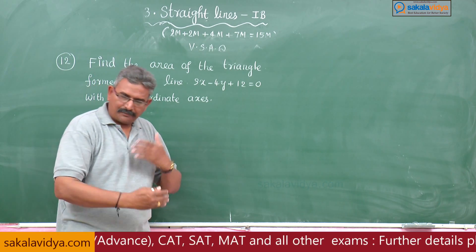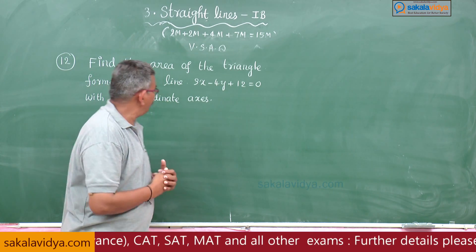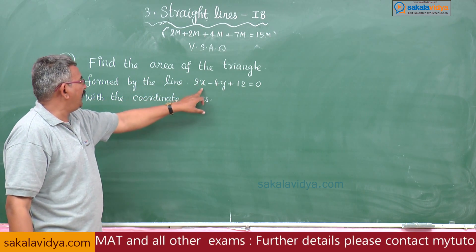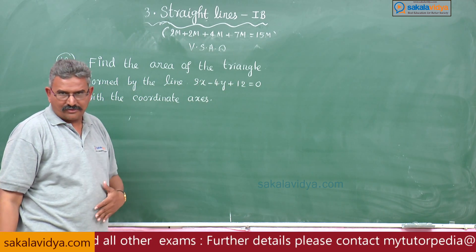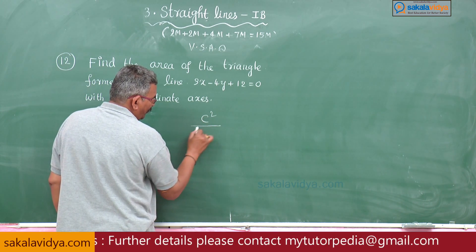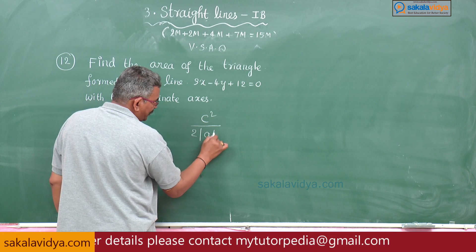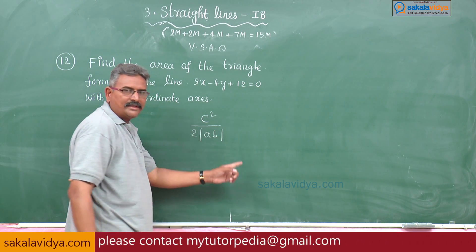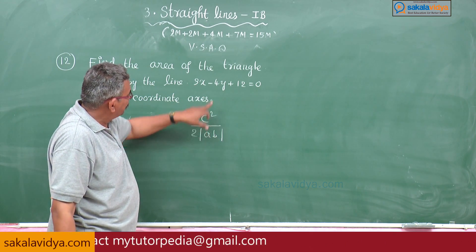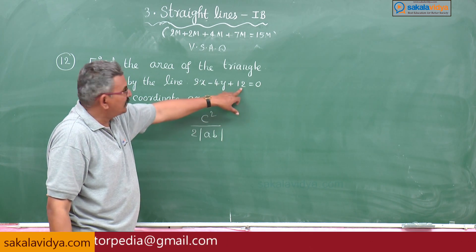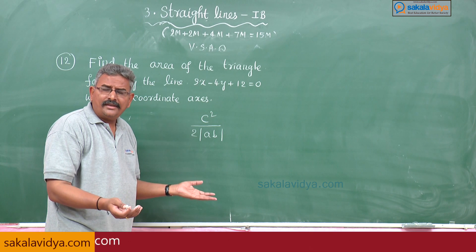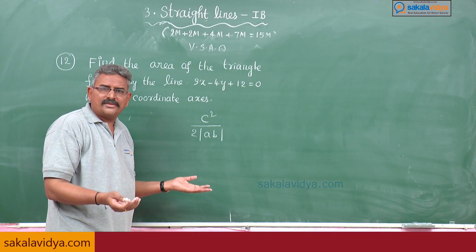What is the formula? The area of the triangle formed by the line ax plus by plus c equals 0 is c squared by 2 mod ab units. Here, a stands for 3, b stands for minus 4, and c stands for 12. Just substitute and simplify to get the answer.